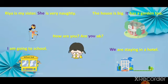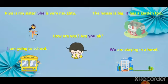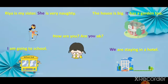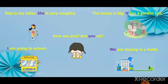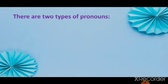'How are you? Are you okay?' In this sentence, you is the pronoun. 'I am going to school.' I is the pronoun. And the last is: 'We are staying in a hotel.' In this sentence, we is the pronoun.